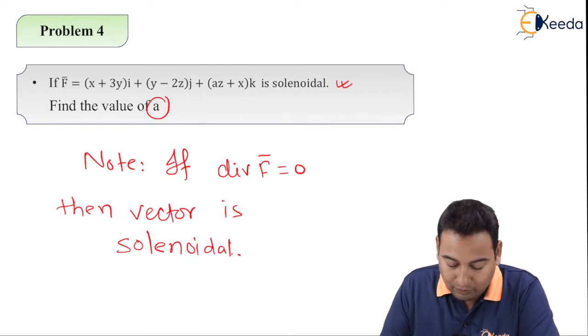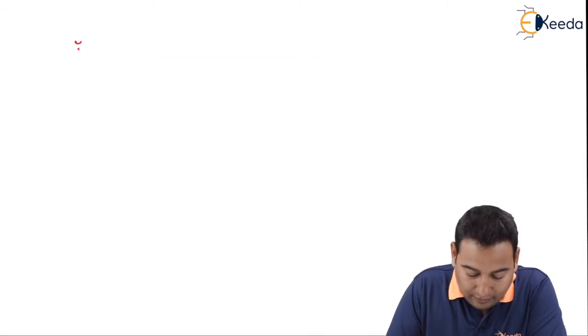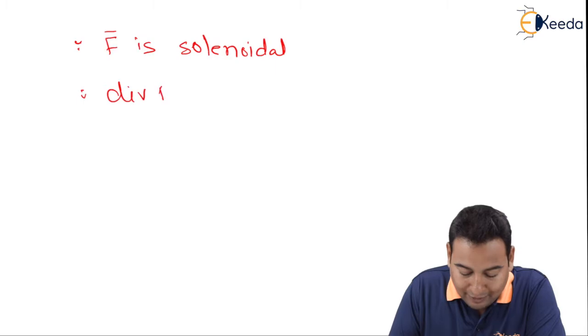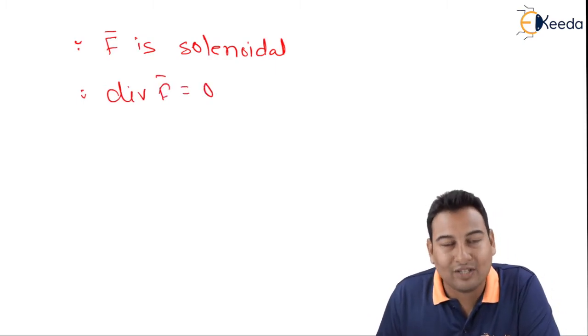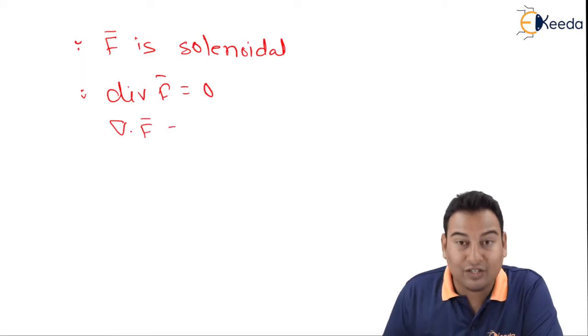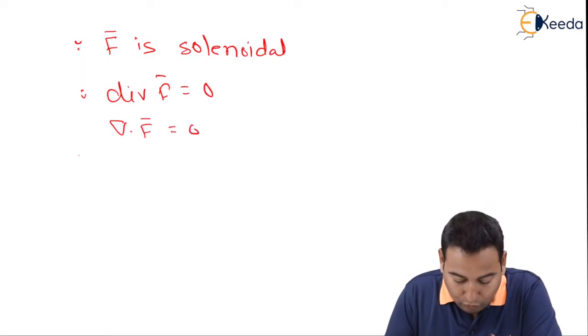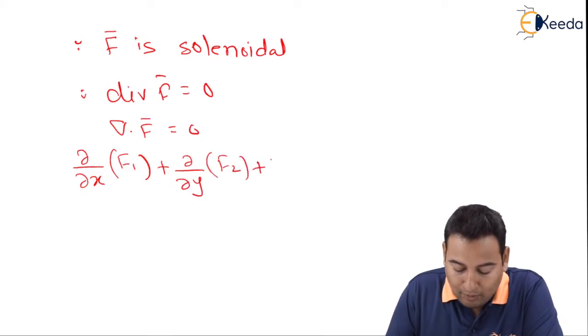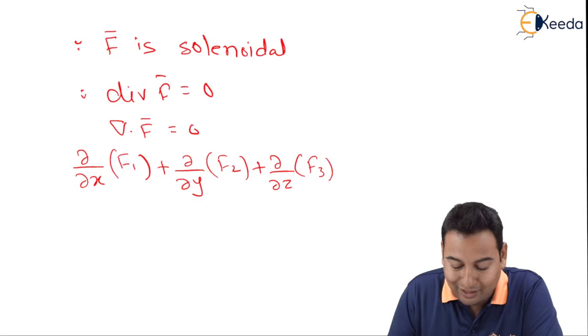We'll be using this to solve this problem, let's start. Since F bar is solenoidal, therefore divergence of F bar is equal to 0. As discussed, what is divergence? Del dot F bar, which is equal to ∂/∂x of f1 plus ∂/∂y of f2 plus ∂/∂z of f3 equal to 0.